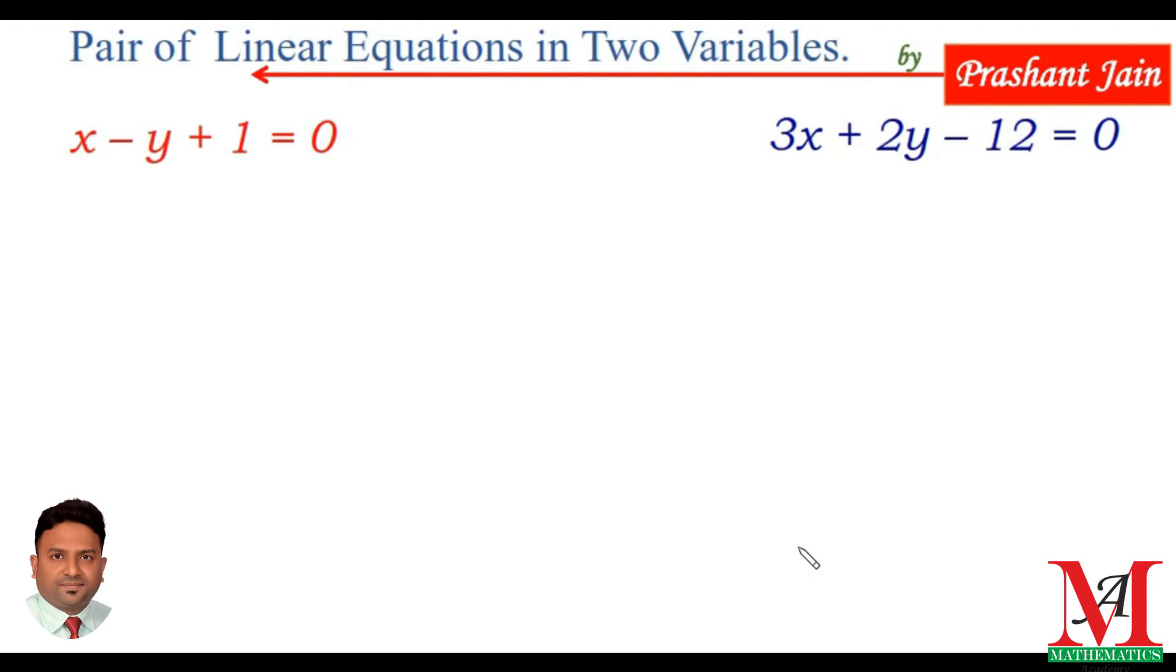Now, first of all, check the consistency and inconsistency of these two equations. First, find the coefficients of x, y, and constant term. a1 is the coefficient of x in equation number 1, and this is 1. b1 is the coefficient of y in this equation, and that is minus 1.